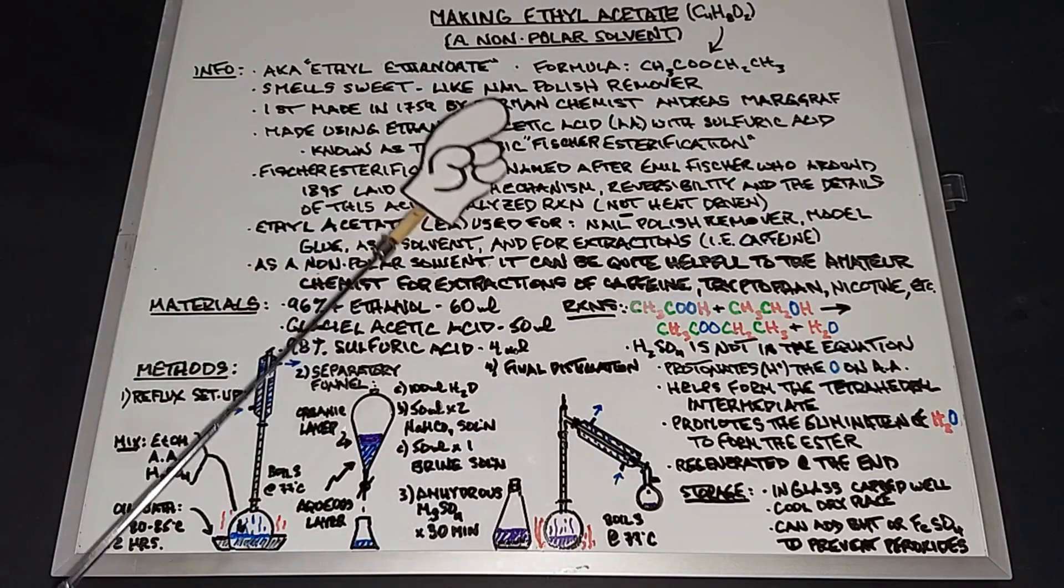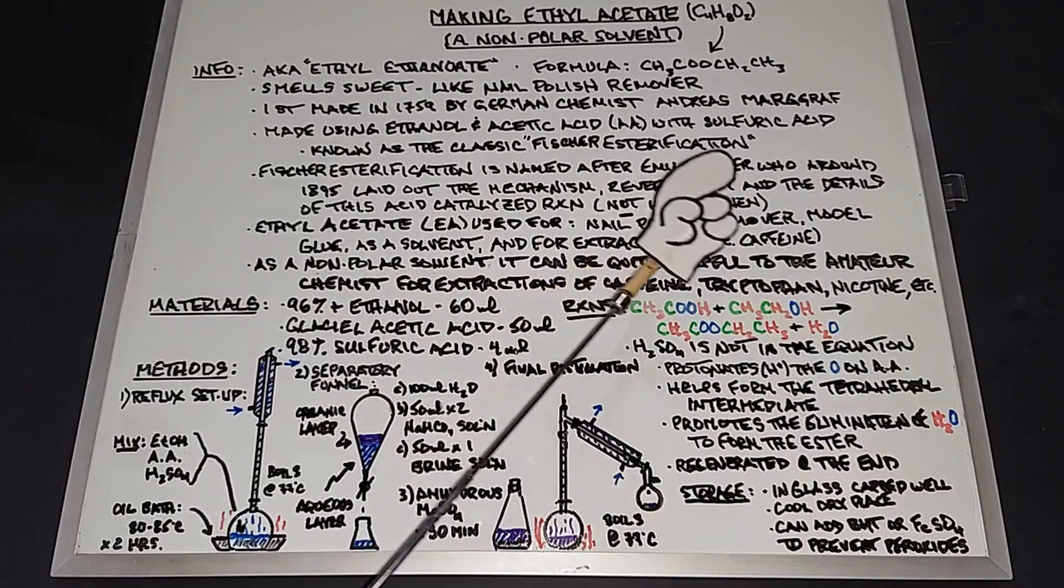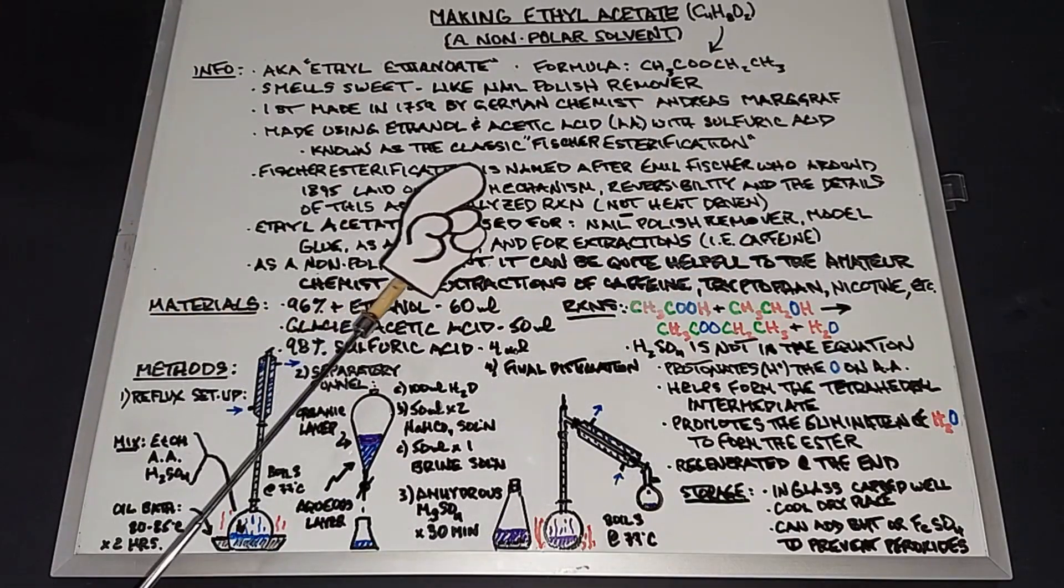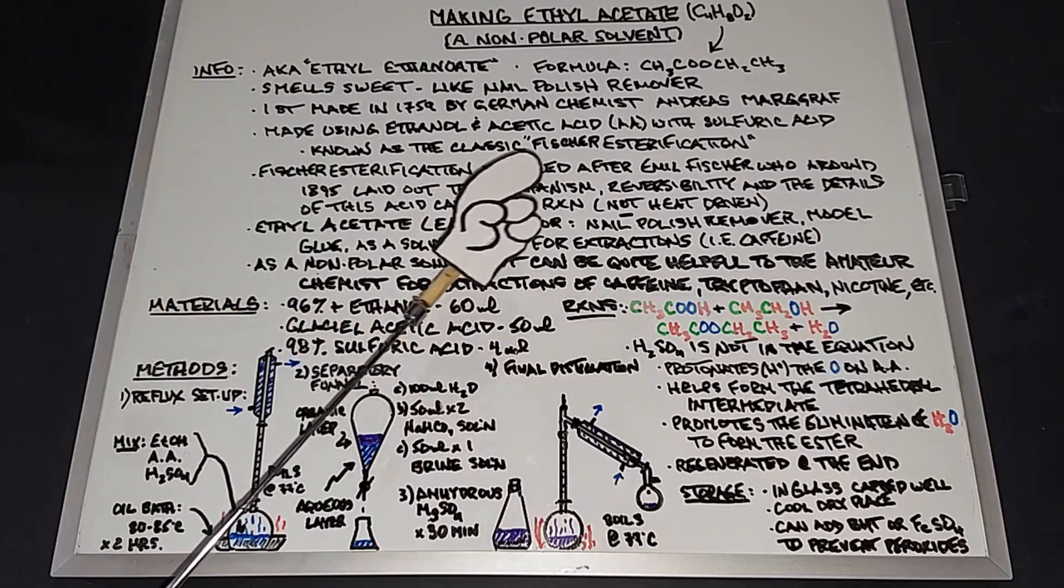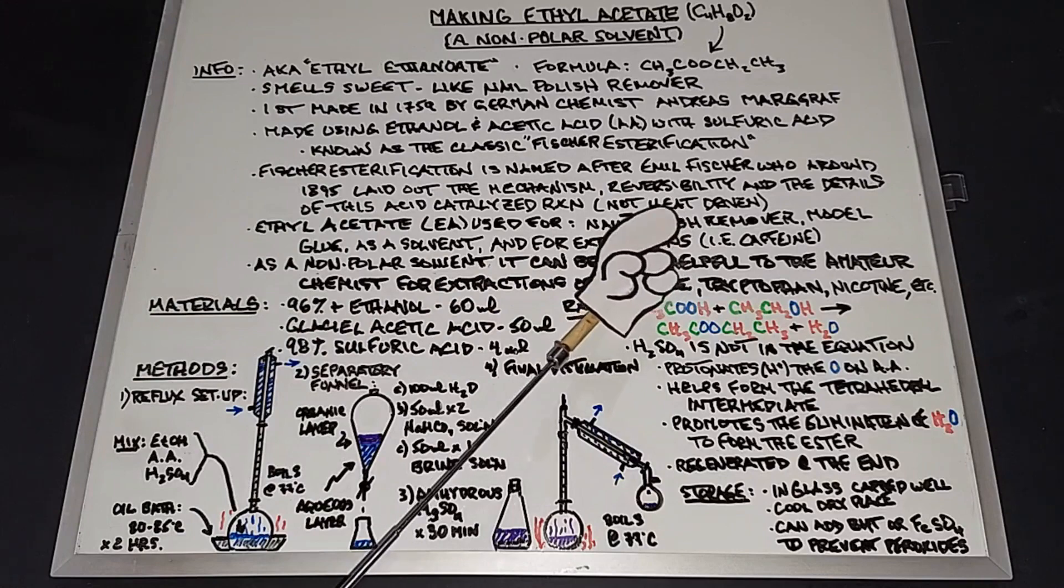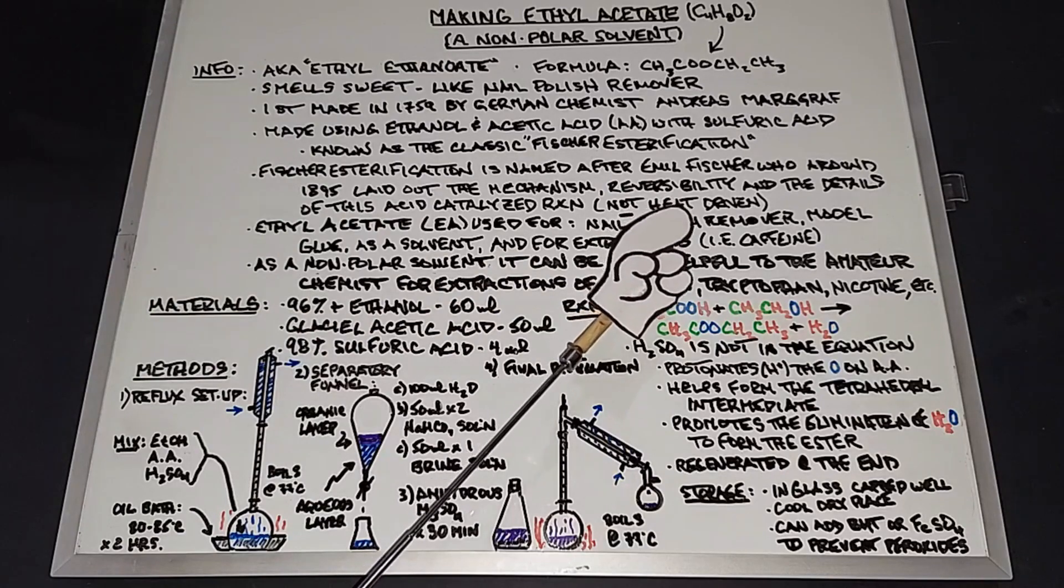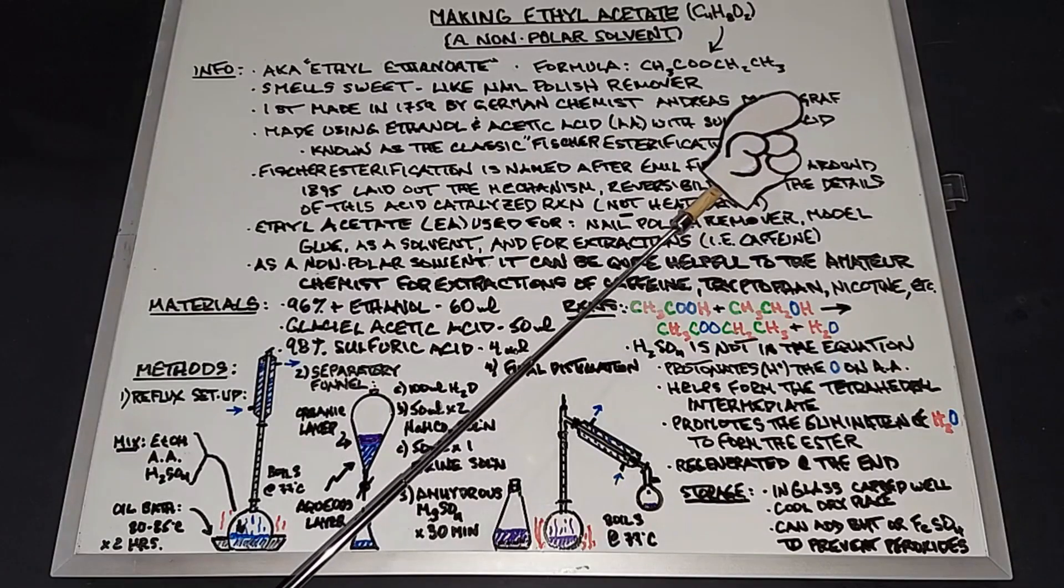Nowadays, more refined, it's known as the classic Fischer esterification. Fischer esterification is named after Emil Fischer, who around 1895 laid out the mechanism, reversibility, and details of this acid-catalyzed reaction. It's not heat driven, although heat is involved in the beginning. It's only done to move the reaction forward. It's actually acid catalyzed, which Margroff did not fully understand back when he did it.